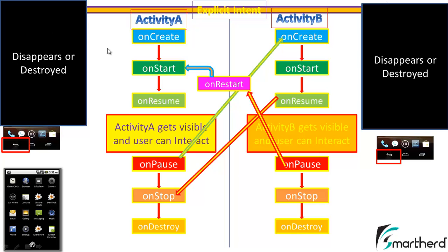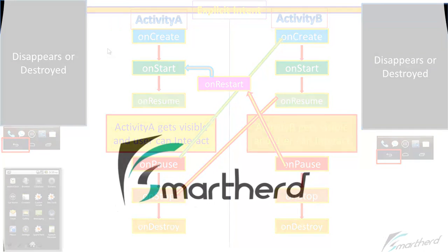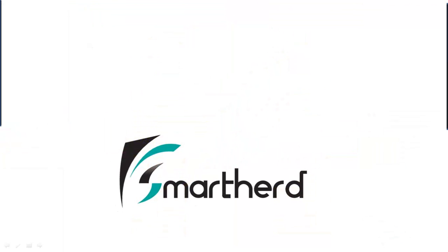Hope things are clear. In the next tutorial, I will jump into Eclipse and show you the code — how the activity lifecycle code works and how it is very useful from an application development point of view. If you want to make a real-time application, you have to make use of all these methods. Stay tuned, catch you in the next tutorial. If you like what you saw, please subscribe to my channel and leave a comment below. This is Ayan from SmartHerd signing off — thank you and have a good day.